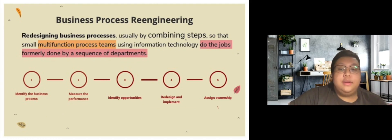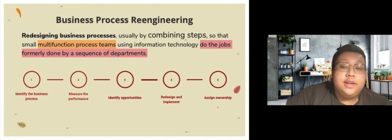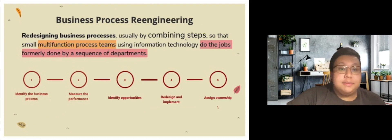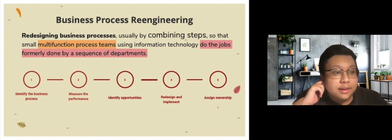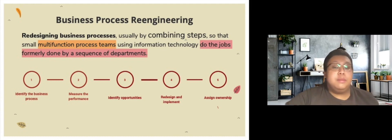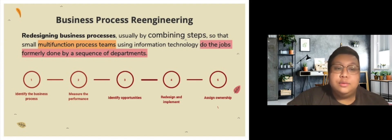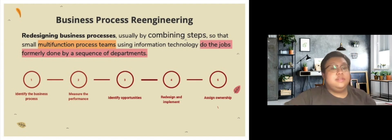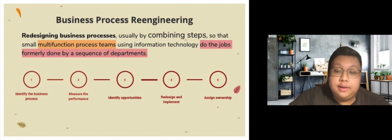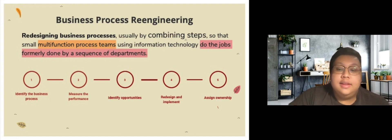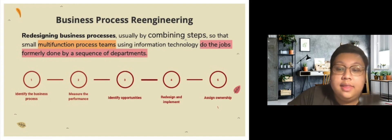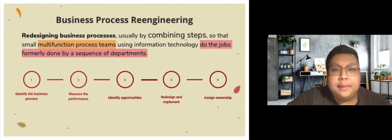By having job analysis, we can also do what is called business process re-engineering, which is usually done by combining steps formerly done by a sequence of departments. Using small multi-function process teams and information technology, the steps are: identify the business process to re-engineer, measure the performance, identify the opportunities, redesign, implement it, and assign ownership.